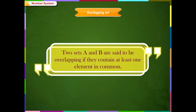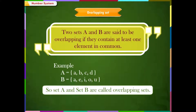Overlapping set: two sets A and B are said to be overlapping if they contain at least one element in common. For example, A is equal to {A, B, C, D} and B is equal to {A, E, I, O, U}. Here, A is common in both the sets. So, set A and set B are called overlapping sets.